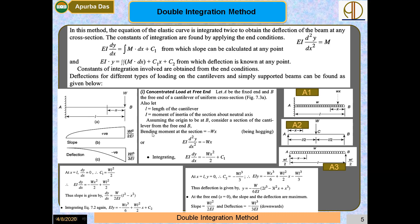At a section where the position is x, the bending moment is M = −Wx (hogging in nature). Substituting into the governing equation: EI · d²y/dx² = −Wx. Integrating once: EI · dy/dx = −Wx²/2 + C₁. To determine C₁ we apply the boundary condition.